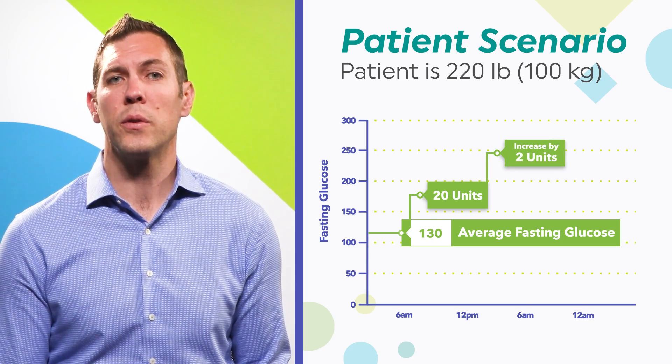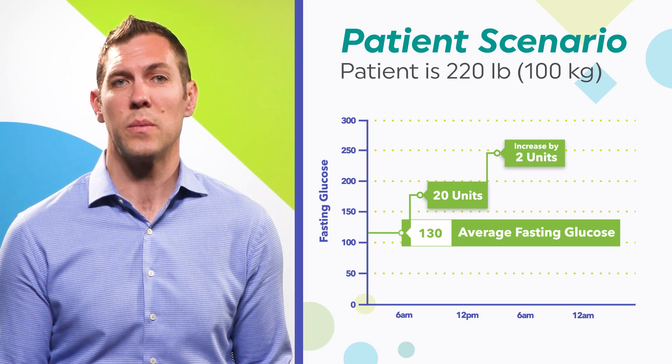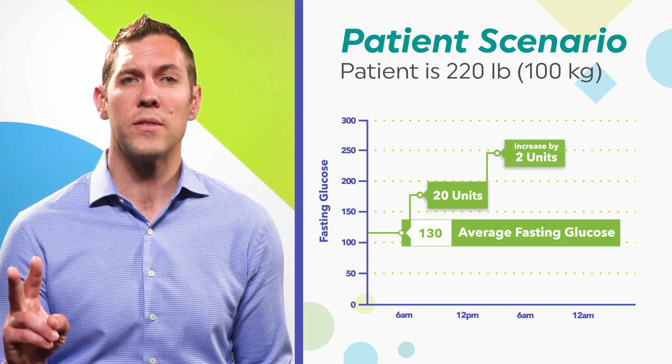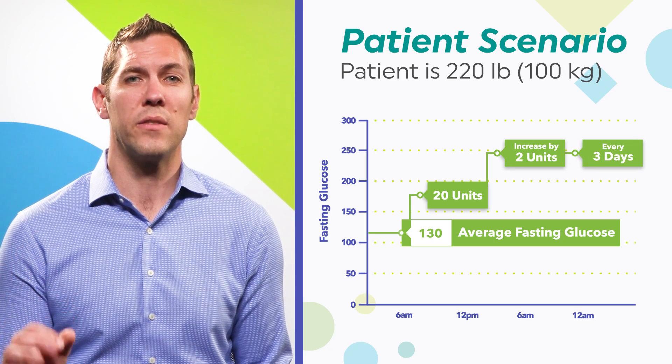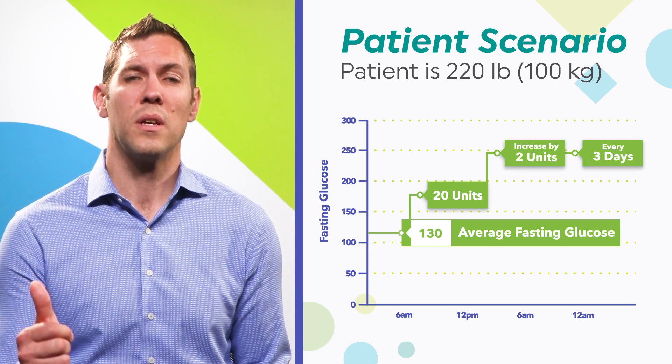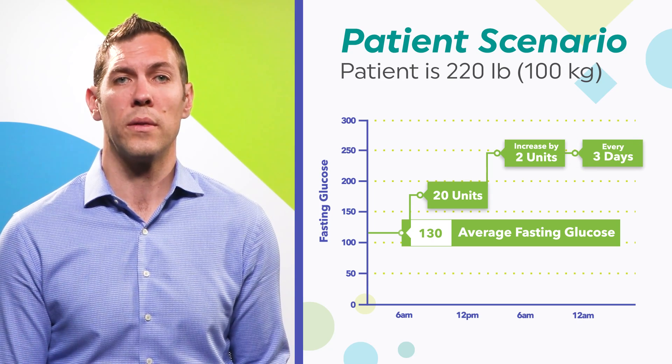We'll select under 130 as our fasting glucose target and encourage that patient to increase their basal insulin by two units every three days if their morning glucose is higher than 130.